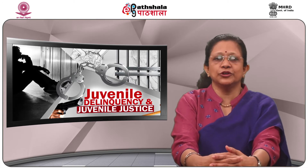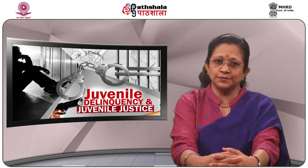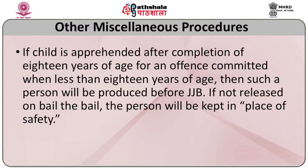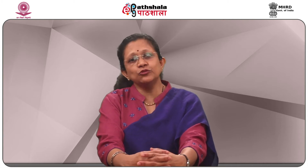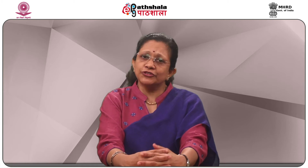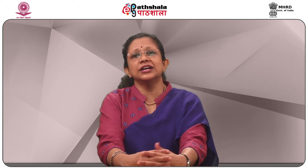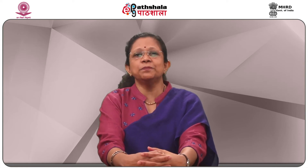If found to be a minor at the time of the offence, the case is to be transferred to the Juvenile Justice Board. If a child is apprehended after completing 18 years of age for an offence committed when the child was less than 18, that child will still be produced before the Juvenile Justice Board. If not released on bail immediately, the child will be moved to a place of safety — a designated closed facility for children who have completed 18 years of age and whose cases are pending or who have been apprehended for such reasons.